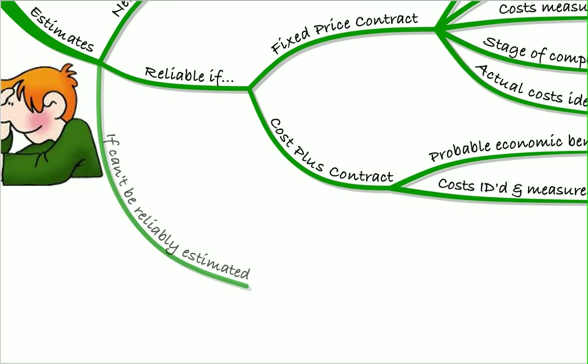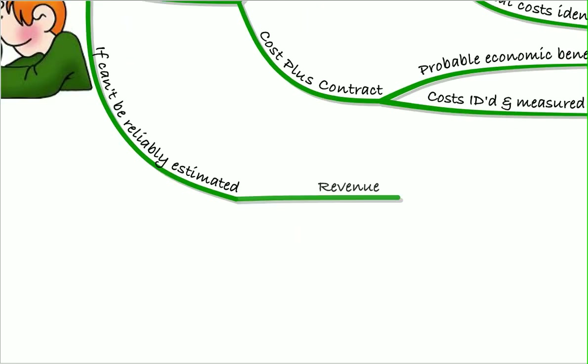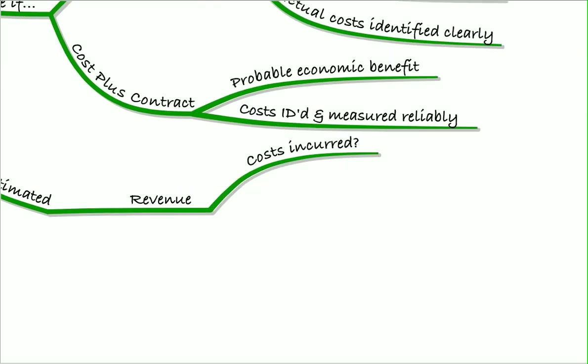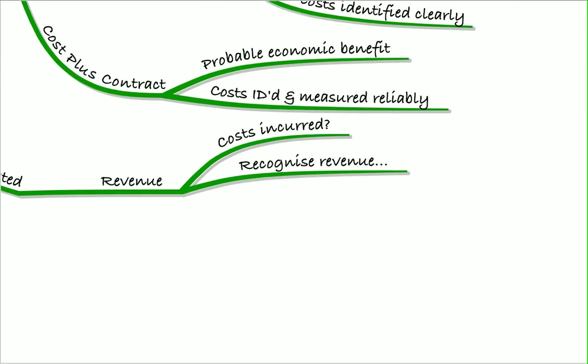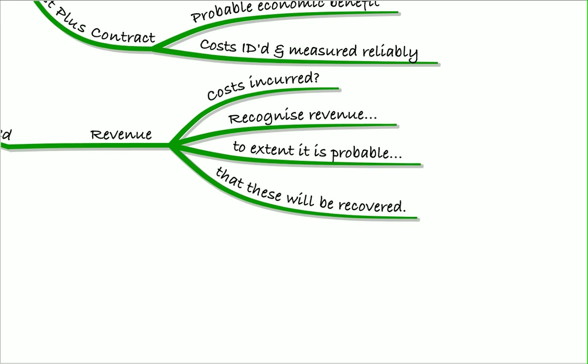Now, if we can't get a reliable estimate on the contract, that causes us a bit of a problem. So if we have revenue, can we actually recognize this if we can't get a reliable measure? Well, if we have incurred some costs, we're going to recognize revenue to the extent that it's probable that those costs will be recovered. I.e., if we can't get a reliable measure, we'll simply recognize enough revenue to write off the costs. We won't recognize any profit.